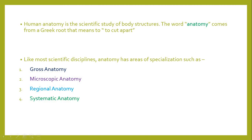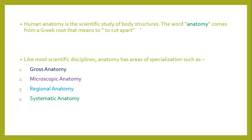Here is the definition: human anatomy is the scientific study of body structures, specifically the internal as well as external structure. The word anatomy comes from a Greek root that means 'cut apart.' When we need to examine any body part — that may be the kidney, heart, or skin — we cut it apart from the body and separately dissect it to study its different parts. This process is known as anatomy.